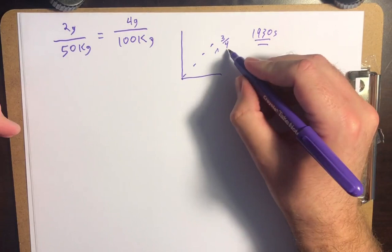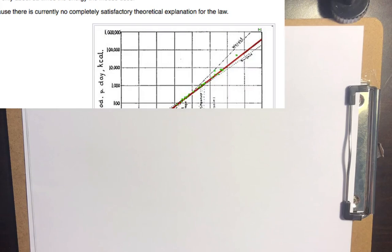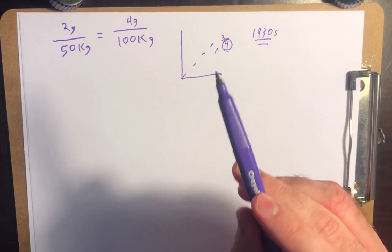And the thing is, it's the four here. This four, the fourth power there, there's no clear explanation, or at least there wasn't for a very long time, as to why this is the case. So the reason why it's a fourth power law is really interesting.